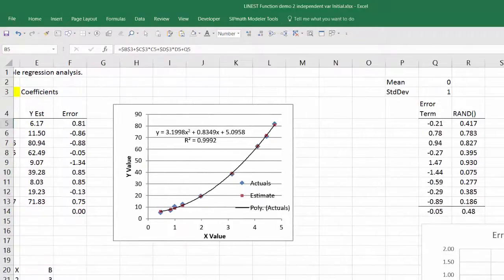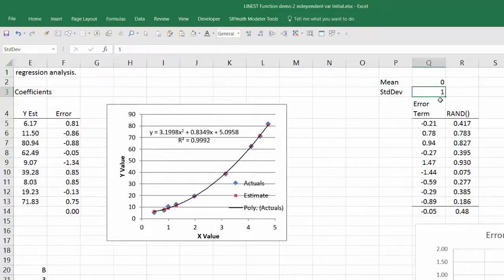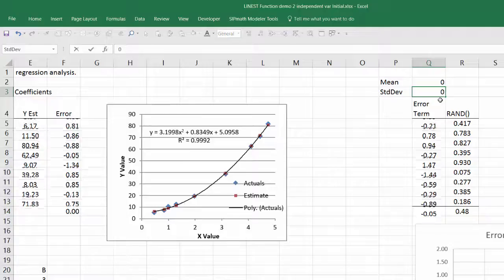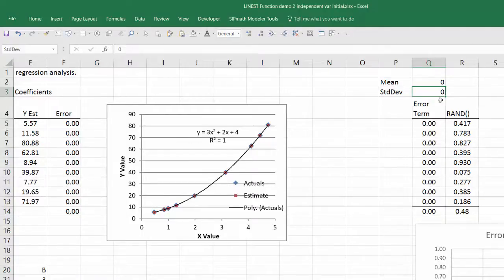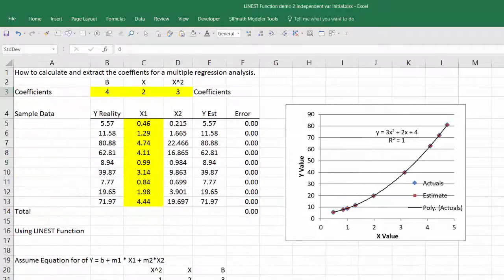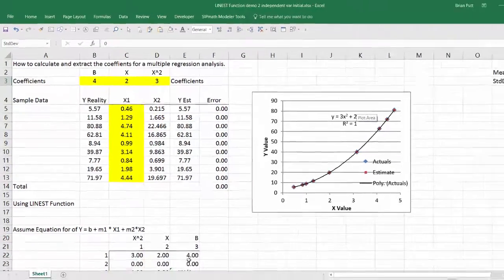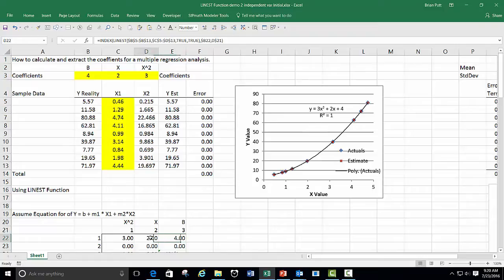As an addendum, I can show as a test, I can come in here and put a normal 0, 0 function, which means no error term. And then you will see that our result is exactly what we would have expected, with a constant of 4, an x term of 2, and x squared term of 3.